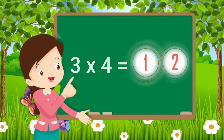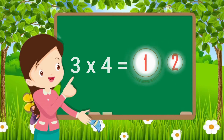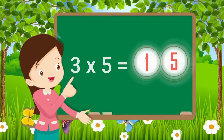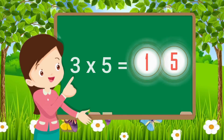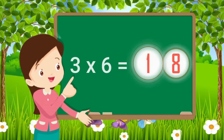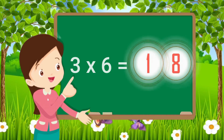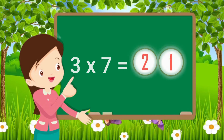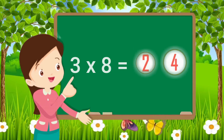Three fours are twelve. Three fives are fifteen. Three sixes are eighteen. Three sevens are twenty-one.